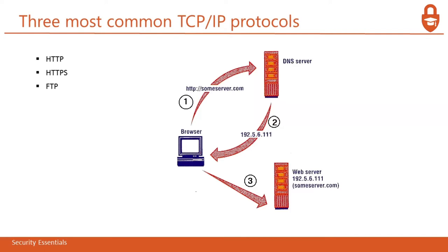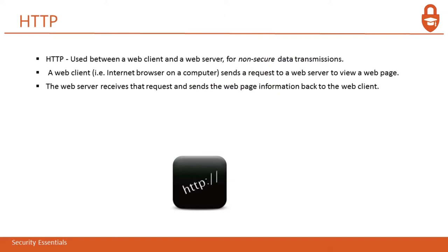HTTP, or Hypertext Transfer Protocol, is used between a web client and a web server. Whenever you use your browser, you can see HTTP in your URL — it is used for communication between client and server for non-secured data transmission. A web client sends a request to a web server to view a web page, and the web server sends the web page information back. Without HTTP, we cannot use the internet.